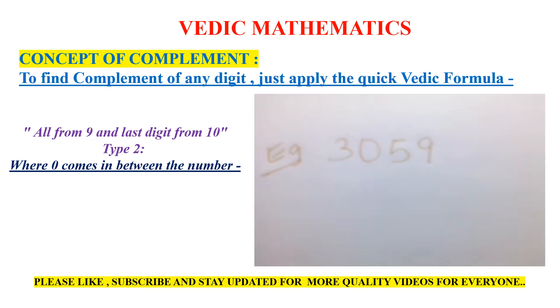So zero comes in between the number. What we have to do in this case is take any digit except zero and subtract it from 9. Remember the quotation: 'all from 9,' and the last digit you subtract from 10.